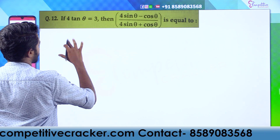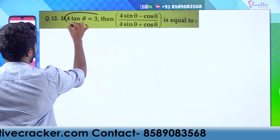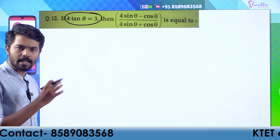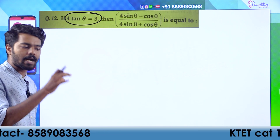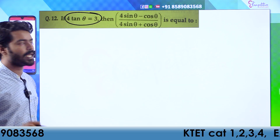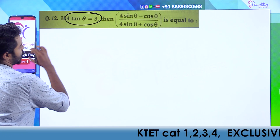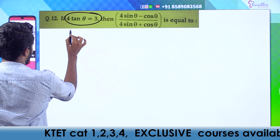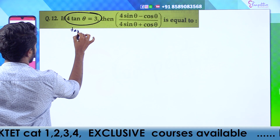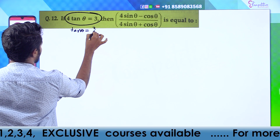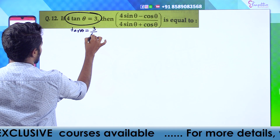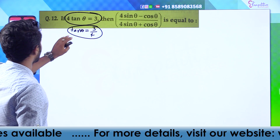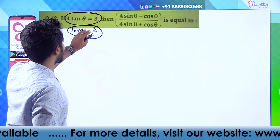We want to choose the condition and write the right answer. Given 4 tan θ equals 3, we have tan θ equal to 3 by 4. Now let's see what we have to do with this value.